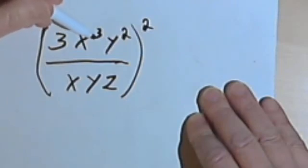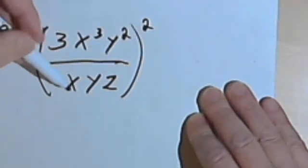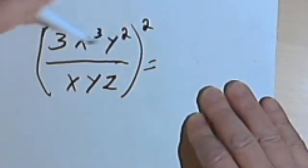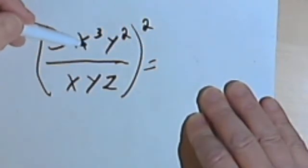So I've got 3x to the third y squared over x, y, z, and that's all raised to the second power. So I'm going to take care of what's inside the parentheses first.